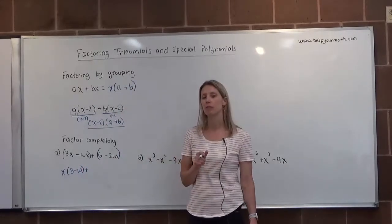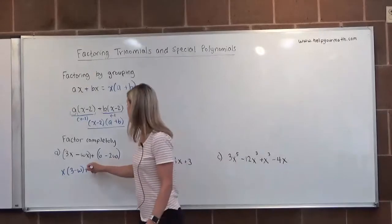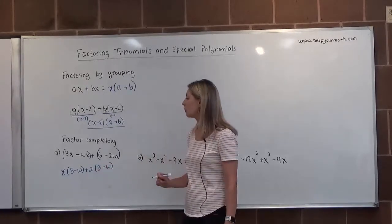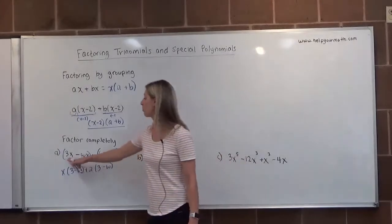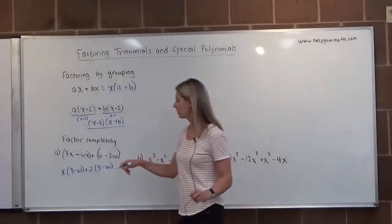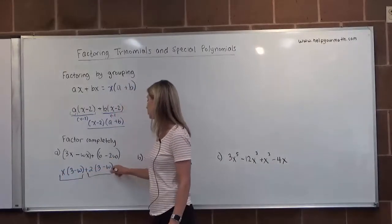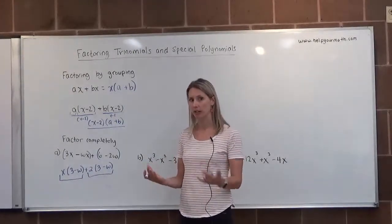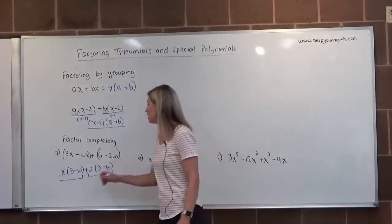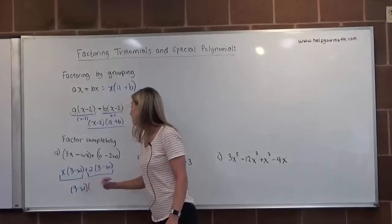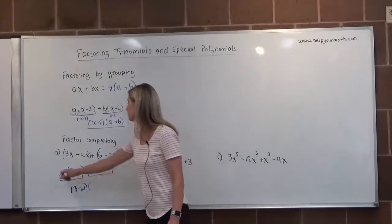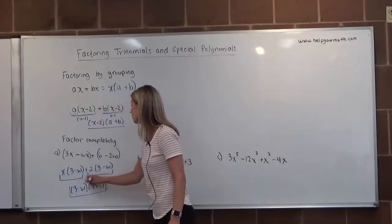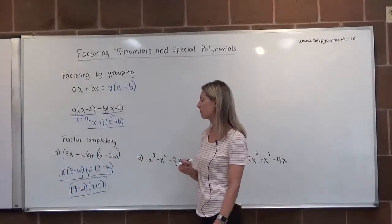The second group, plus 6 and 2w, has a greatest common factor of 2. We factor out 2, and the leftovers are (3 minus w). Now we've gone from four terms down to two terms. Those two terms have a common factor of (3 minus w), so we pull that out as the GCF. What's left in the second set of parentheses is x plus 2. So the completely factored form of 3x minus wx plus 6 minus 2w is (3 minus w)(x plus 2).